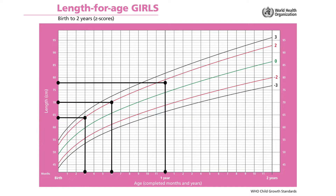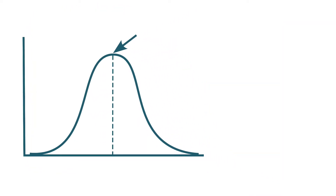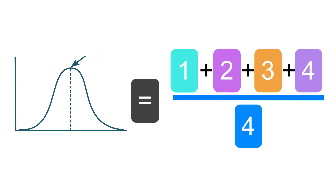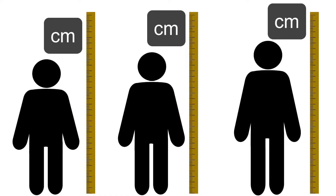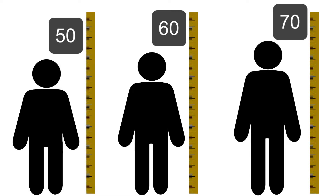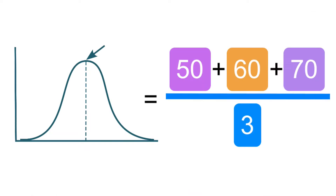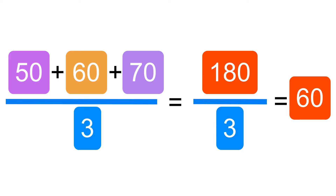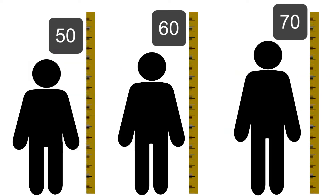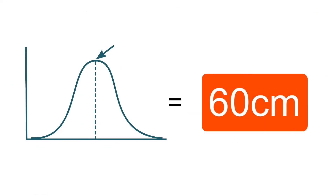So far, we have learnt how to plot points on a Z-score growth chart. To interpret these plotted points, we need to understand certain terms. The first term is mean, which is the average of a set of numbers. Suppose we measure the height of 3 children in centimetres: 50, 60, and 70. The mean or average of this set will be 50 plus 60 plus 70, that is, 180 divided by 3. So the average height in this group of children is 60 centimetres.